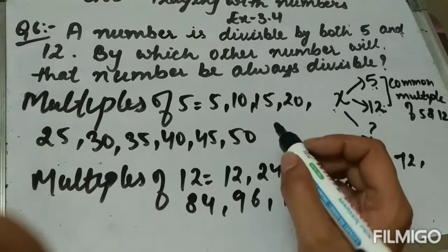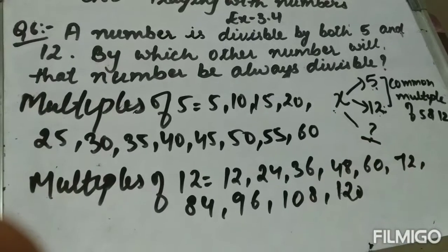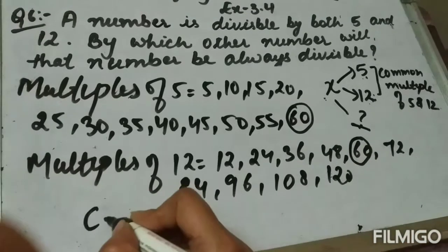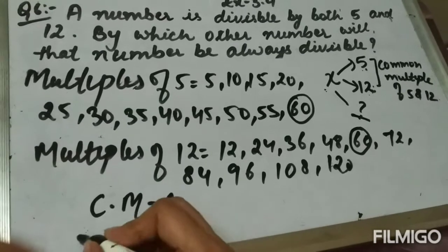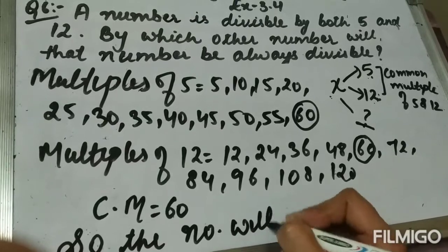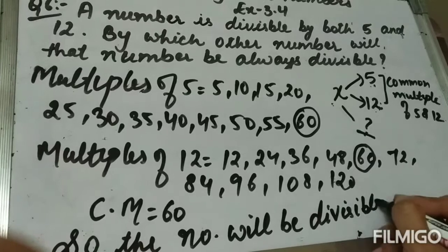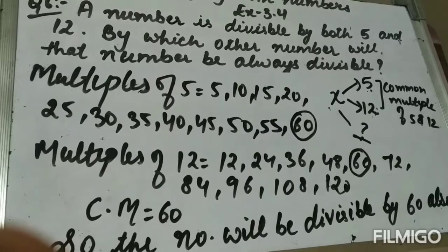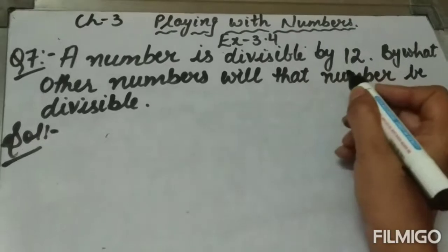Checking for common multiples — continuing the multiples of 5: 55, 60. The first common multiple is 60. So the number will be divisible by 60 also.